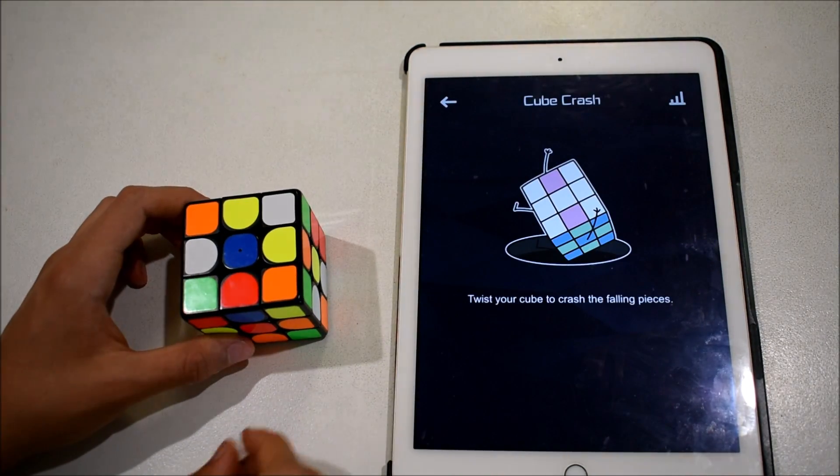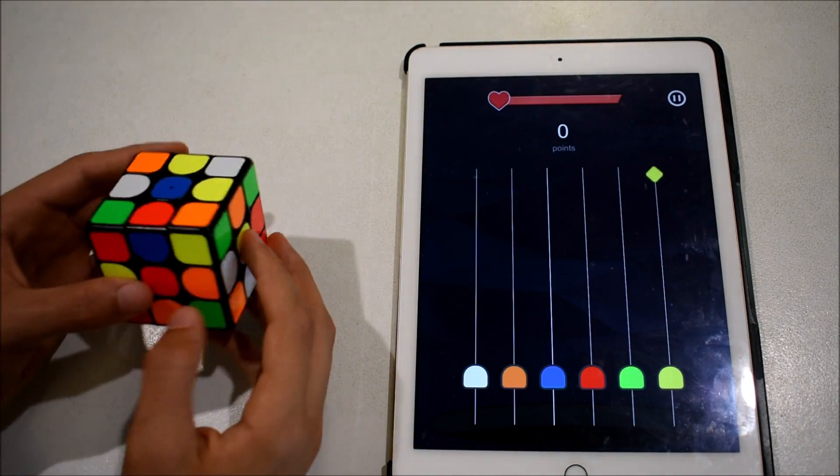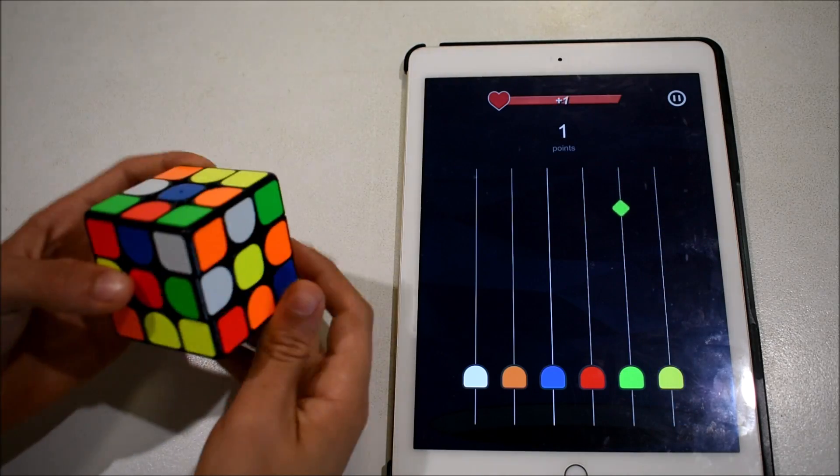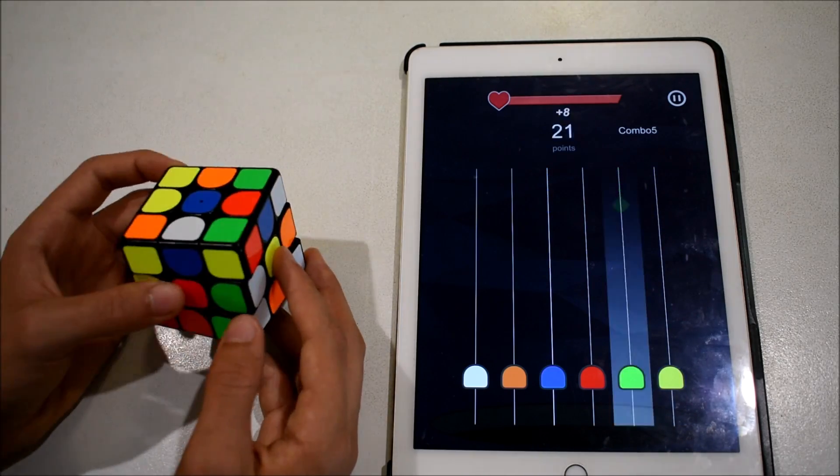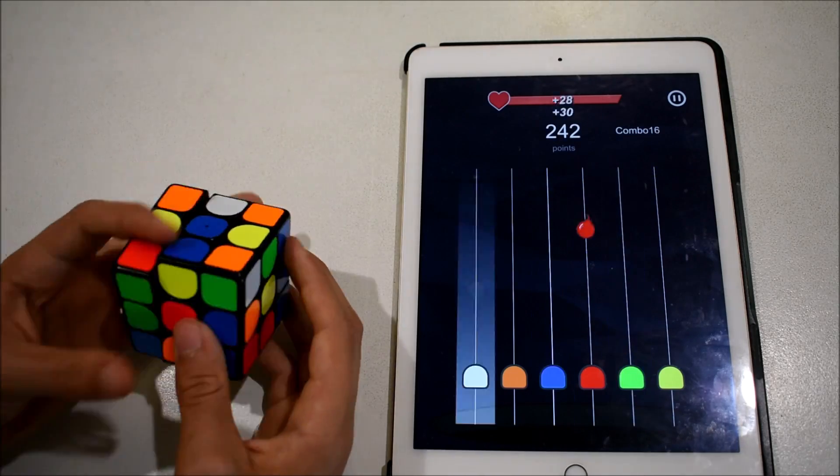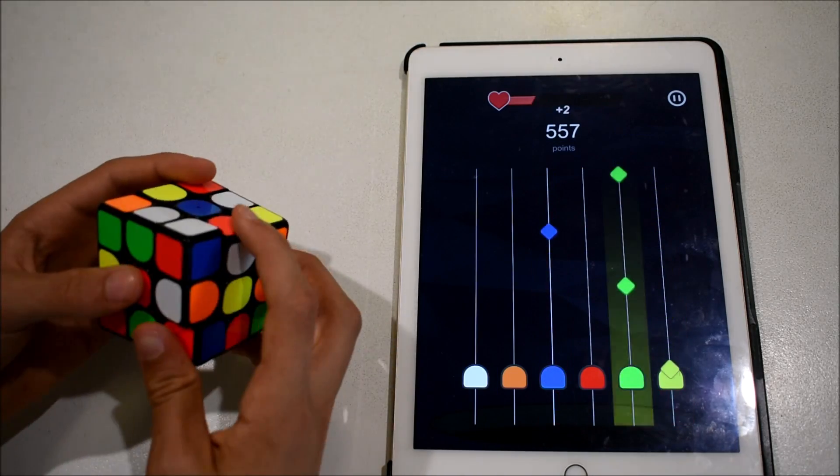The next mini game is Cube Crash. This is similar to colour memory where you have to turn the sides of the colours that fall down but you don't have to turn the sides in the exact same order they come to you. As the game goes on, more colours fall down and you have to react much faster.